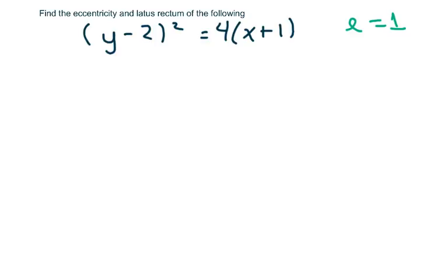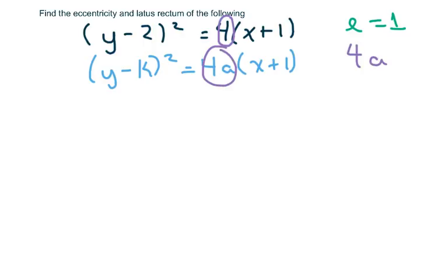So what we're going to do is, first of all, find A. So in this case, if I rewrite this as y minus 2 squared, well, let's write this as k, equals 4a times x plus 1. Then I set these two equal to each other, because we want to find A. So 4a equals 4, so A is 1. And then we know that A equals C equals 1.